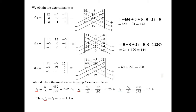Using the formula: I1 equals delta 1 over delta, so 432 divided by 192 equals 2.25 amperes. Similarly, I2 equals delta 2 over delta: 144 divided by 192 equals 0.75 amperes. And I3 equals delta 3 over delta: 288 divided by 192 equals 1.5 amperes. The question asked for I0, and we saw earlier that I0 equals I1 minus I2, so 2.25 minus 0.75 gives us the answer: 1.5 amperes.